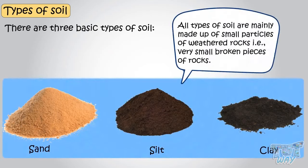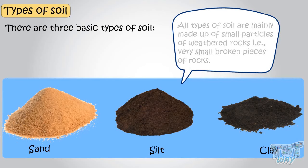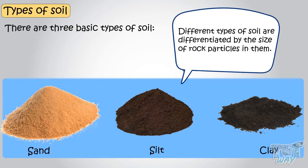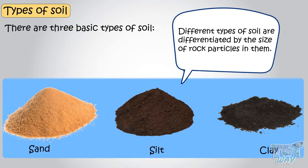All types of soil are mainly made up of small particles of weathered rocks — that is, very small, broken pieces of rocks. And different types of soil are differentiated by the size of rock particles in them.